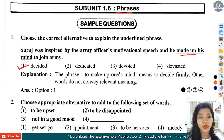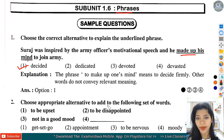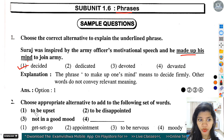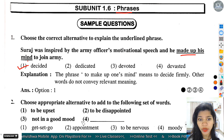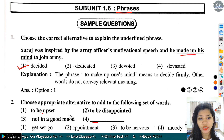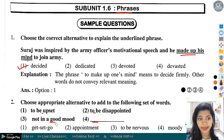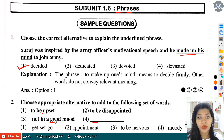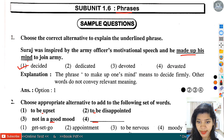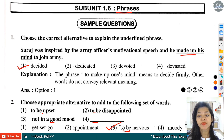Question number 2: Choose appropriate alternatives to add the following set of words. Option 1: to be upset. Second: to be disappointed. Third: not in a good mood. Fourth में आपको बताना है. यह तीनों ही sentences same mood को explain कर रहे हैं - upset होना, disappoint होना, और good mood में न होना. Option number 3: to be nervous - हमारे यहां पर correct होगा.